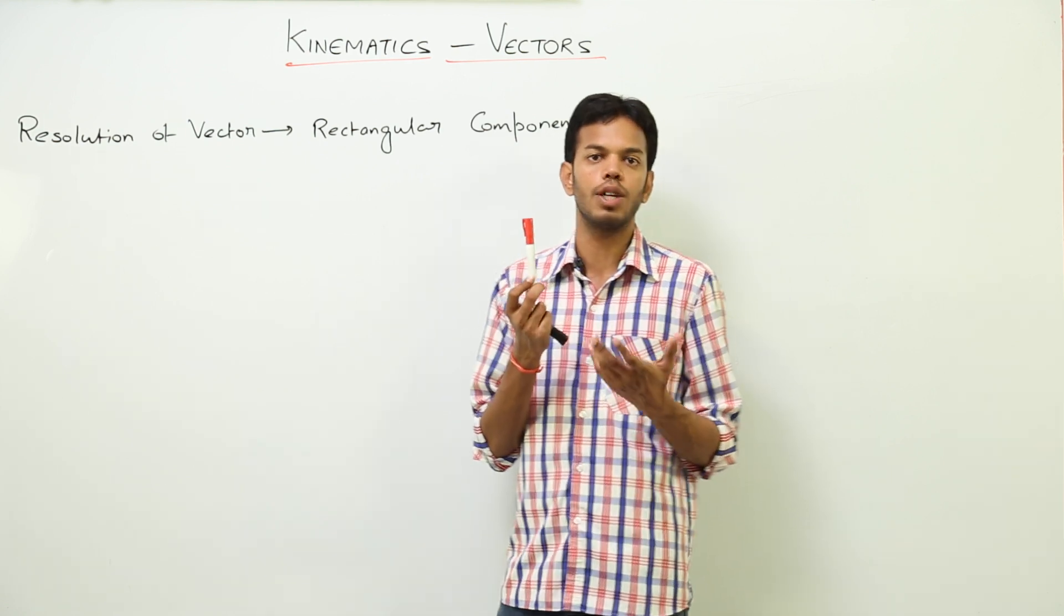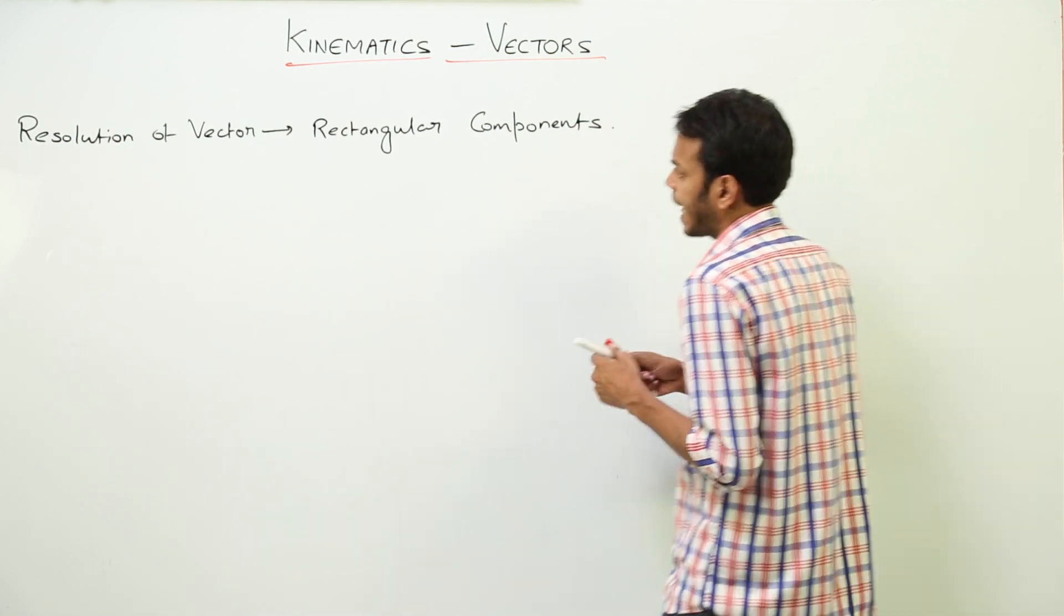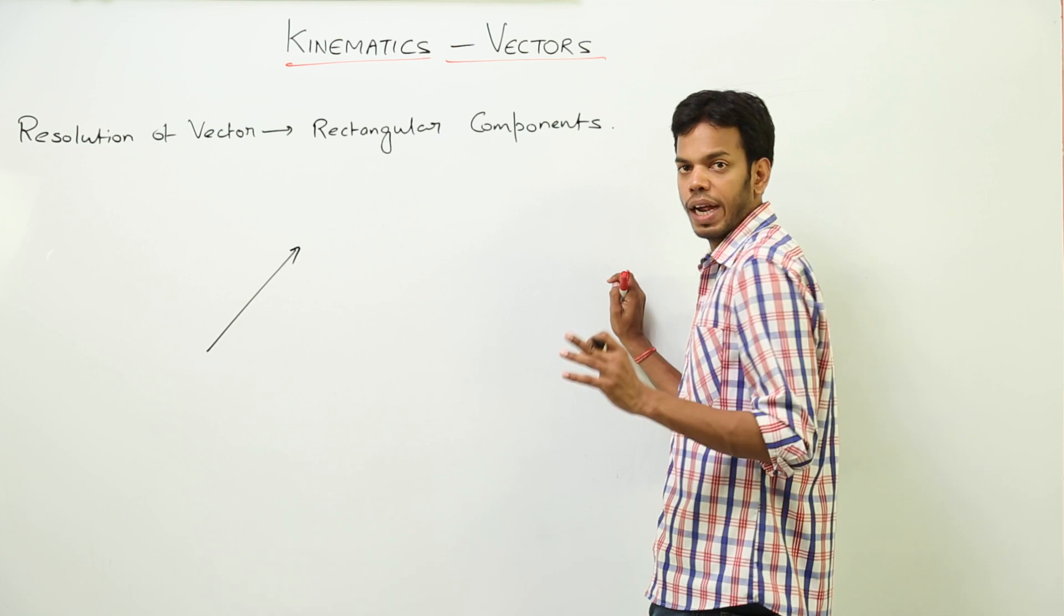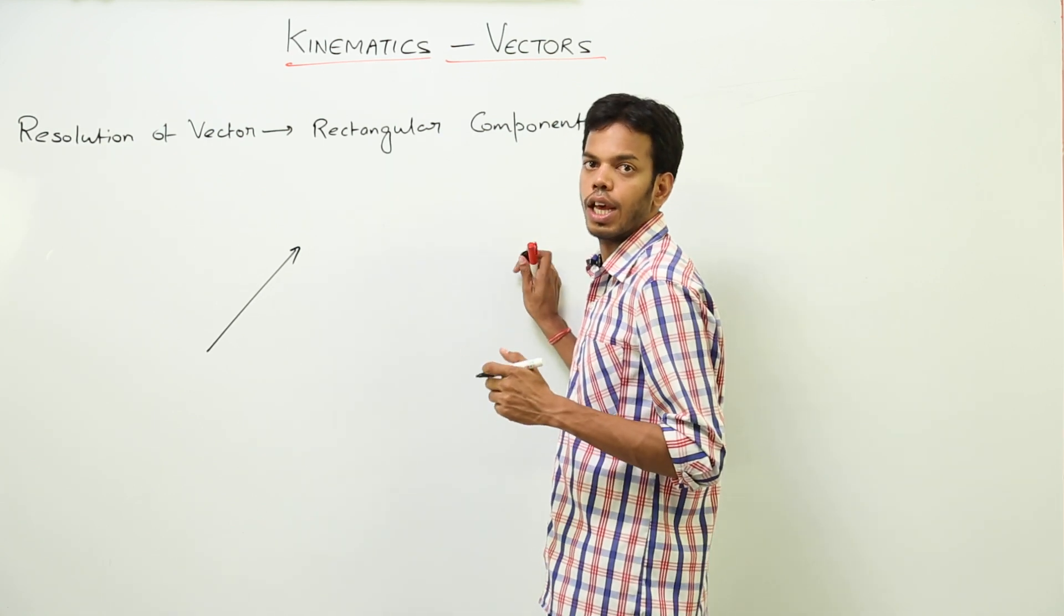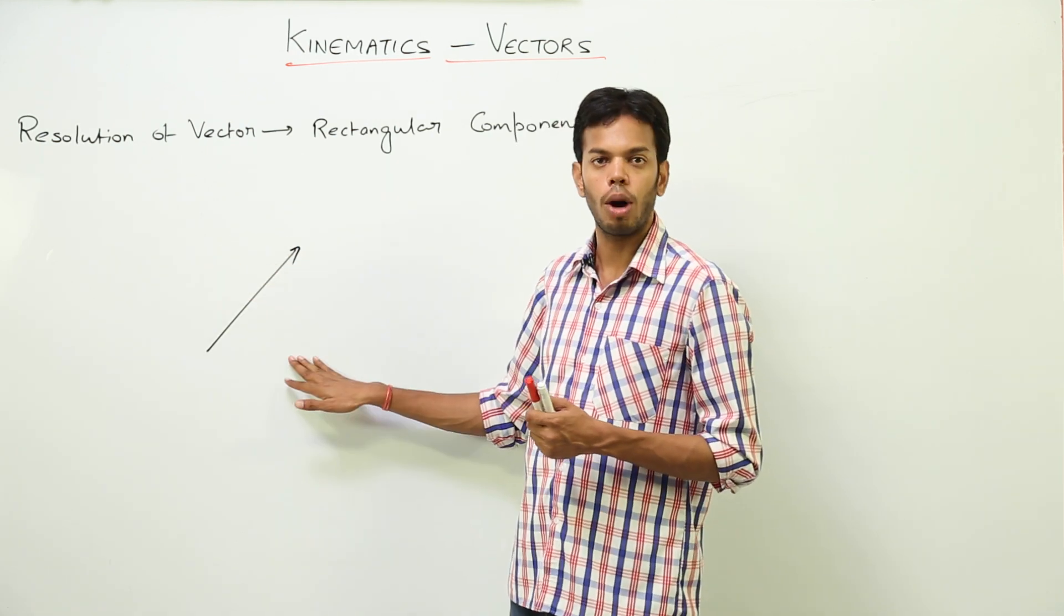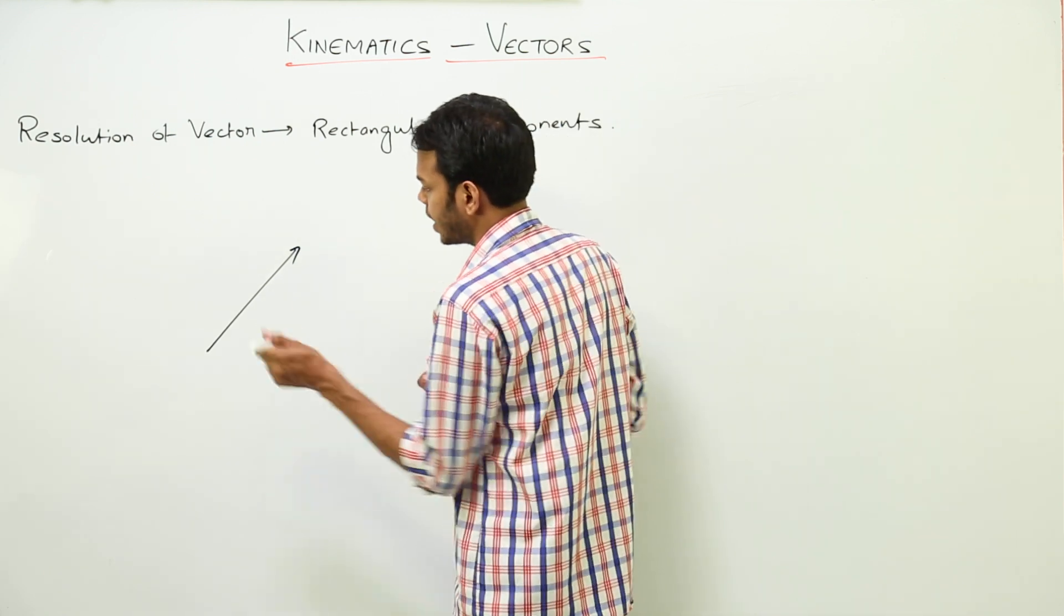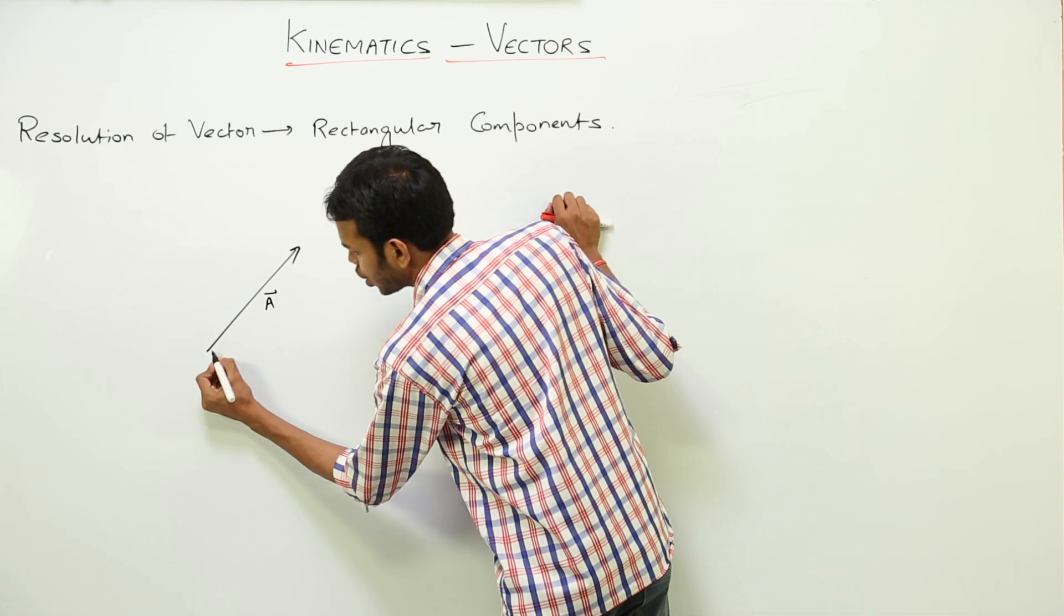So same way, rectangular components of this vector would be two vectors which are in horizontal and vertical directions, such that the resultant of those rectangular components will be back the same vector. For example, suppose this vector is vector A. Let's make a construction in this direction and in this direction.